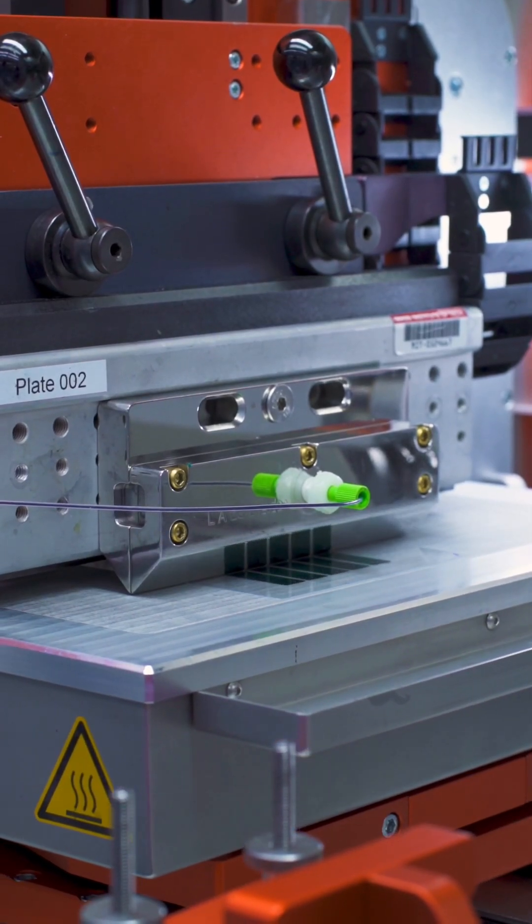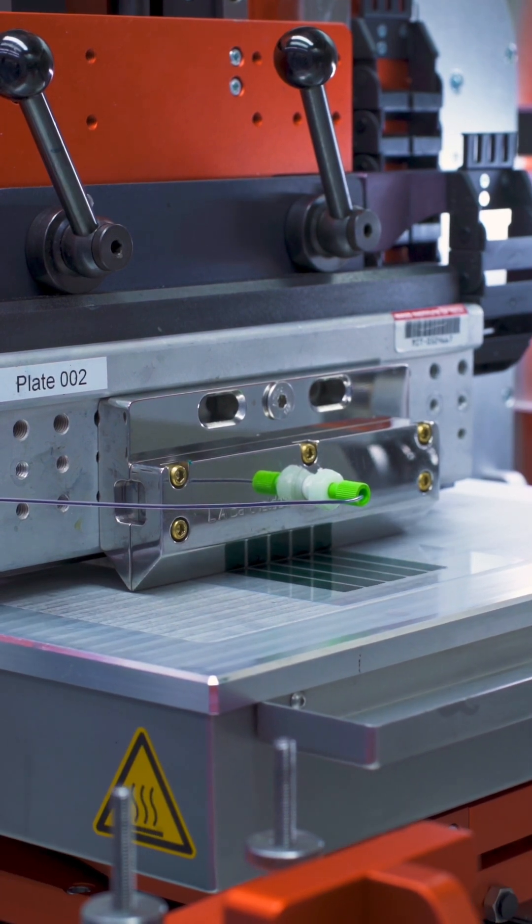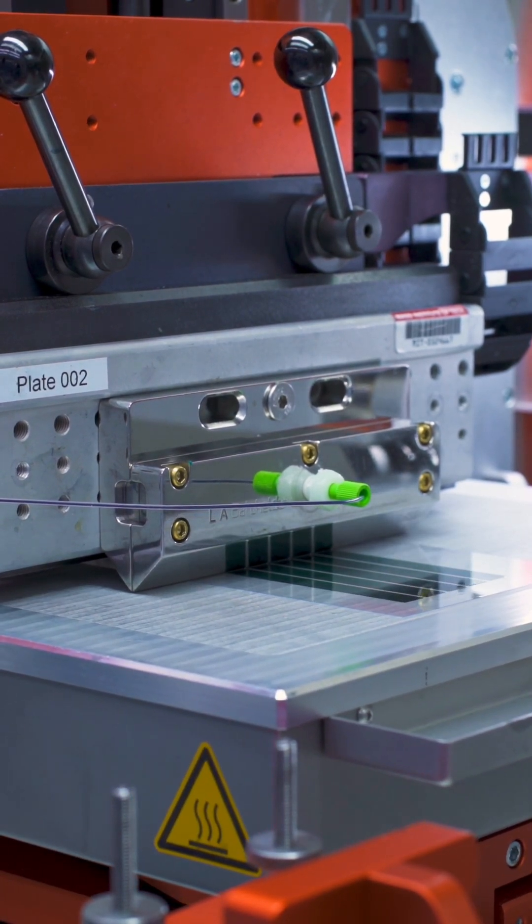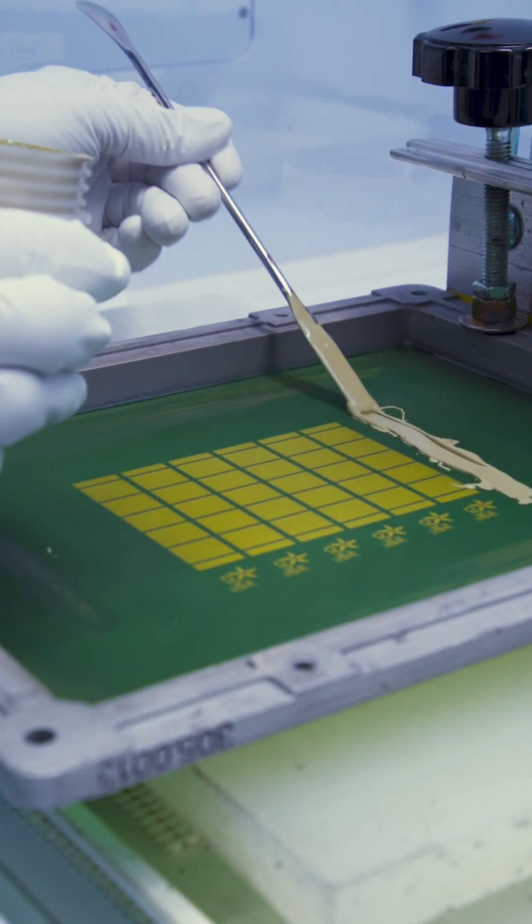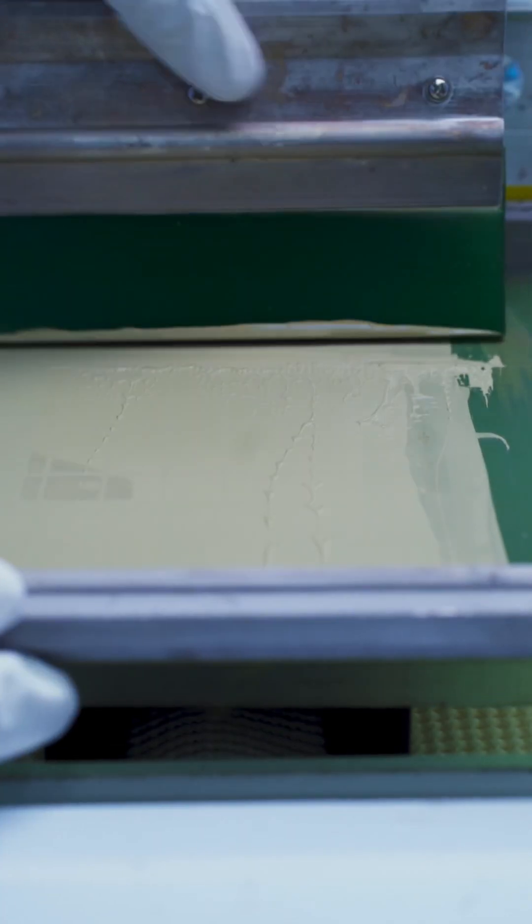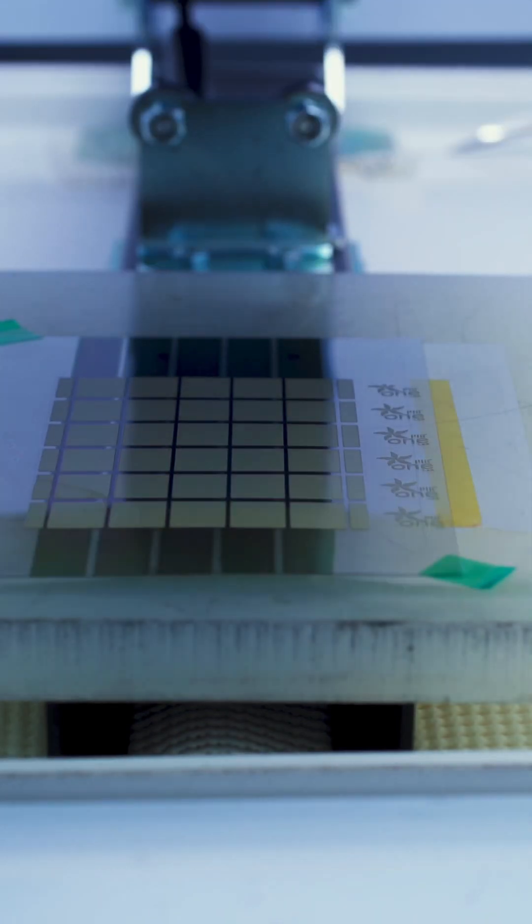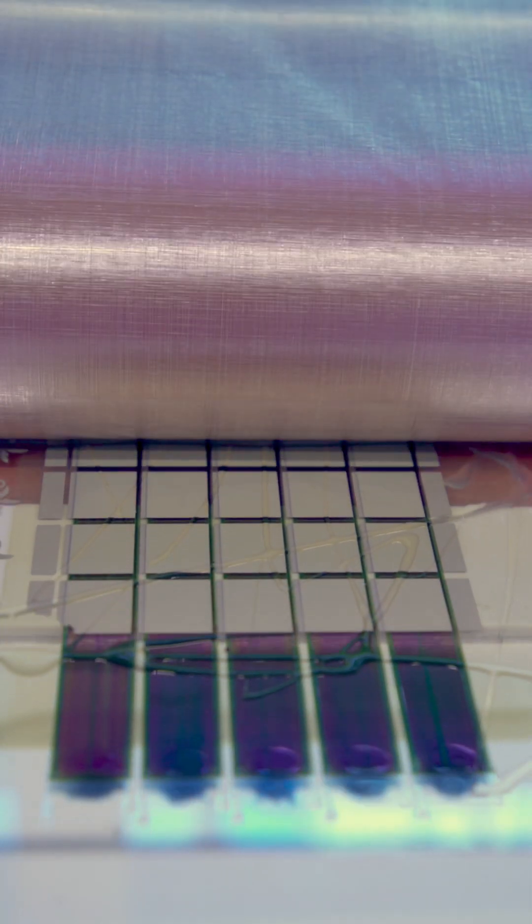To create a solar cell, the researchers coat a stack of nanomaterials in the form of electronic inks onto a prepared peelable substrate. Then, using simple screen printing techniques, an electrode which collects the generated power is added to the top of the solar cell. The solar cell can be peeled off the substrate and then laminated onto a variety of materials.